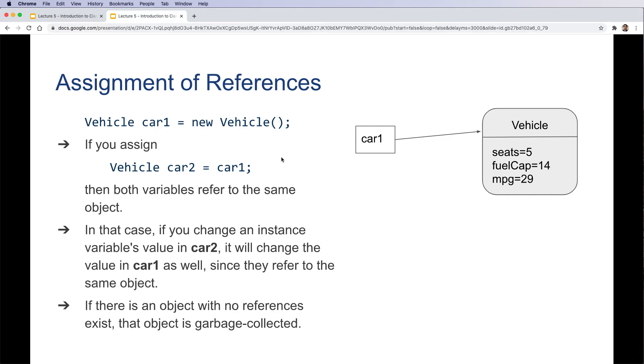Here's an illustration: with the first line, we create a name car1, then we create a new vehicle. We set these values and we have car1 reference this vehicle.